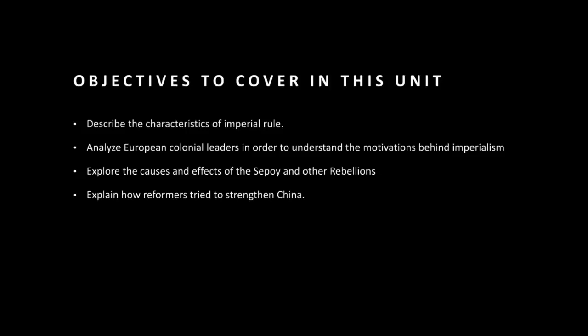One major event was the Boxer Rebellion — a violent anti-foreign, anti-Christian uprising in 1900, which highlighted growing tensions between reformers and conservative forces in China, ultimately leading to increased foreign intervention and concessions. Despite these efforts, China's attempts to strengthen itself faced numerous challenges, including resistance from conservative factions, foreign intervention, and internal divisions. This wraps up our unit — thank you for listening, and I look forward to working with you over this unit and in class.